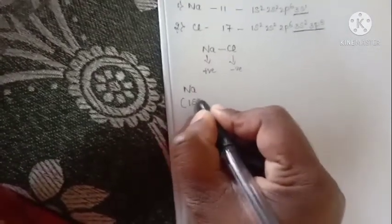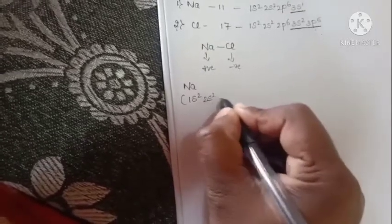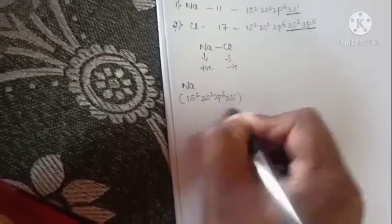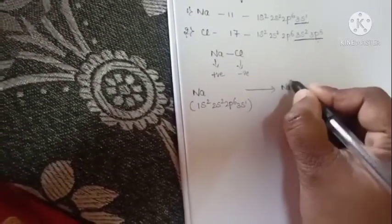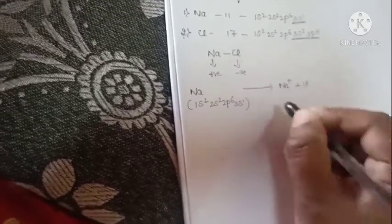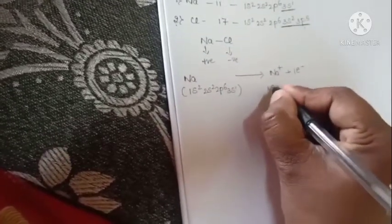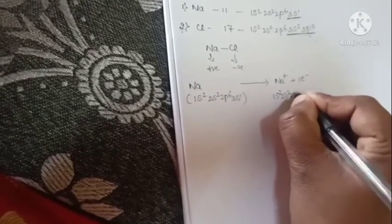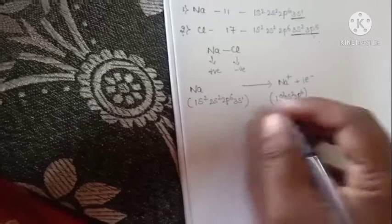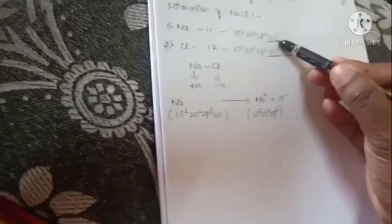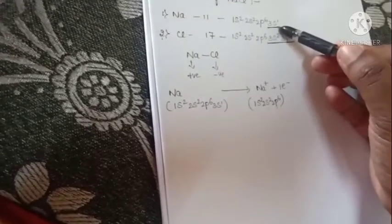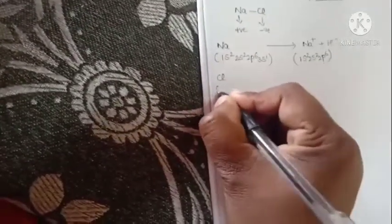See here: Na has the electronic configuration 1s2, 2s2, 2p6, 3s1. It loses one electron. After losing that electron, the electronic configuration becomes 1s2, 2s2, 2p6 because the outermost shell electron is donated to the chlorine atom. Chlorine's electronic configuration is 1s2, 2s2, 2p6, 3s2, 3p5.